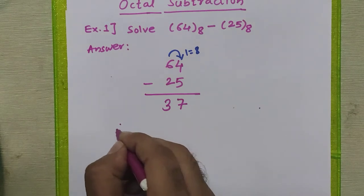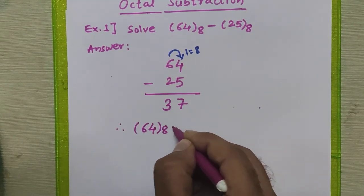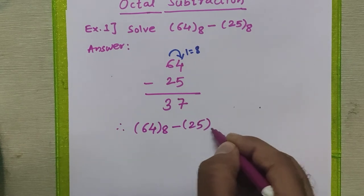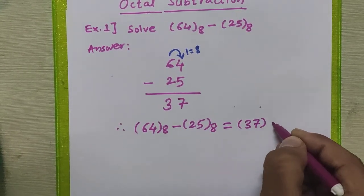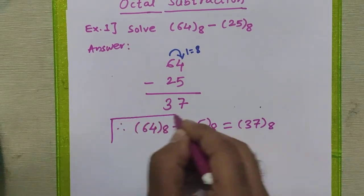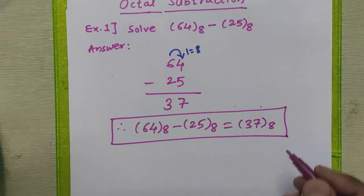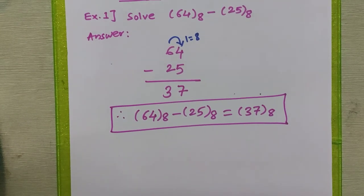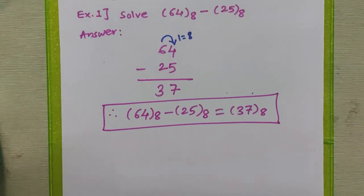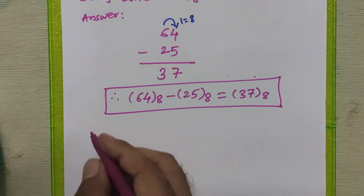Therefore, 64 octal minus 25 octal equals 37 in octal. That is the answer for this problem. To understand better, we will see one more example performing the subtraction of two octal numbers directly without converting to any other base.